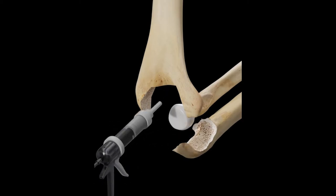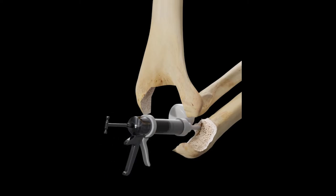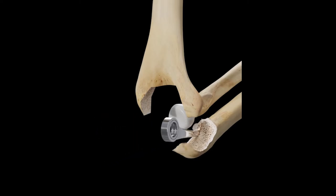The stems of the humeral and ulnar components are then impacted into the bone channels and are fixed by the cement.